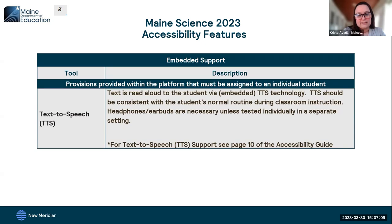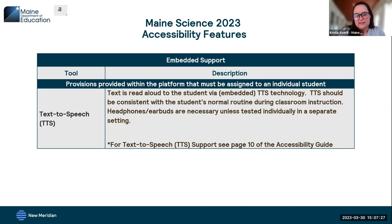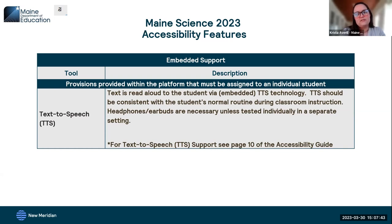The embedded designated support is text-to-speech, which reads text aloud to the student — including directions, questions, answers, prompts, and reading passages on the side. Text-to-speech is a designated support requiring two things: an educational team of two or more individuals with knowledge of a student's performance, and that it's consistent with their day-to-day instruction. Educational teams could be two teachers, a teacher and the school assessment coordinator, or a teacher and the district assessment coordinator — the decision should not be made by a single individual.